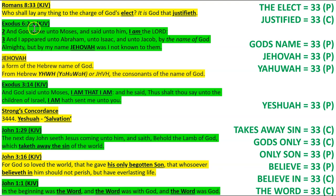Exodus 6:2-3: 'And God spake unto Moses, and said unto him, I am the Lord. And I appeared unto Abraham, unto Isaac, and unto Jacob, by the name of God Almighty. But by my name Jehovah was I not known to them.' Jehovah, a form of the Hebrew name of God — from Hebrew Yod-Heh-Vah-Heh, Yahuwah, the consonance of the name of God. God's name, Jehovah, Yahuwah — 33. Yeshua, the Hebrew name for Jesus Christ, translates to salvation — Yeshua, 33.